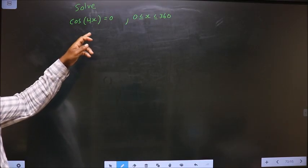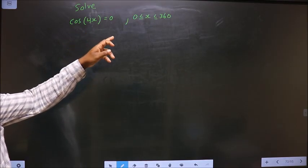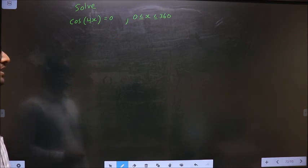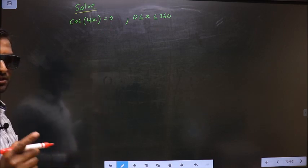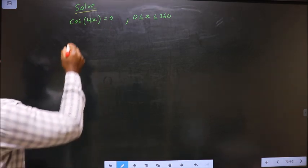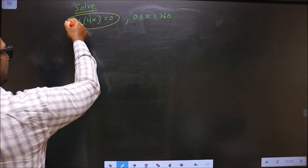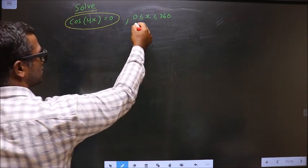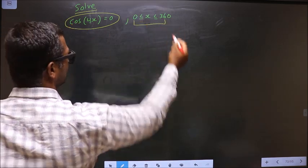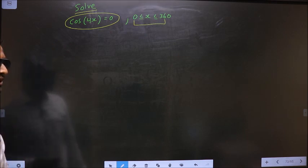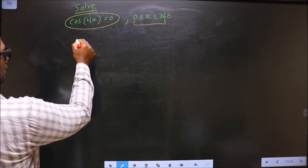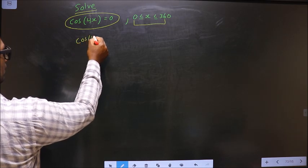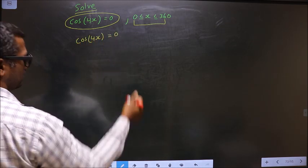Solve cos(4x) = 0 where x lies in the interval 0 to 360 degrees. We need to find all values of x satisfying this equation that also lie in the interval 0 to 360 degrees. The given equation is cos(4x) = 0.